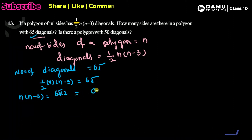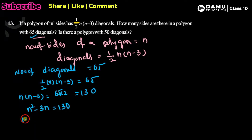So n × (n − 3) = 65 × 2 = 130. Expanding, n² − 3n = 130, which gives us n² − 3n − 130 = 0.